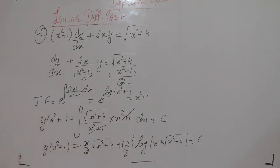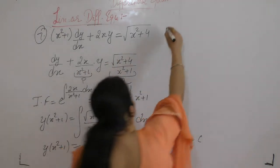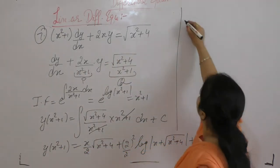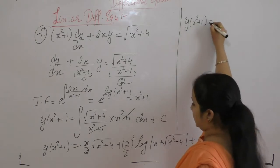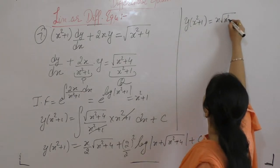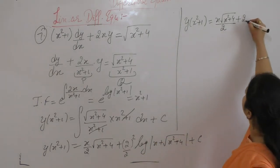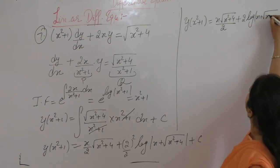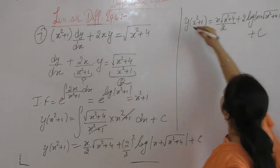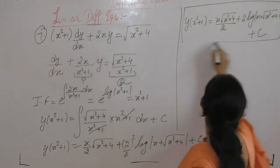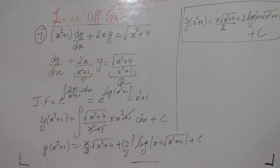So what we get in the next step? y into (x² + 1) is equals to x · √(x² + 4) / 2 + 4/2 · log of (x + √(x² + 4)) + constant of integration c. That is: y(x² + 1) = x/2 · √(x² + 4) + 2 · log(x + √(x² + 4)) + c.